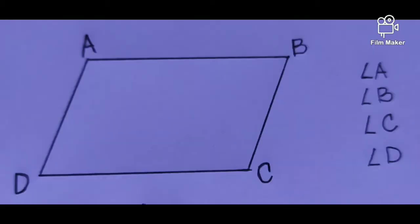We also have the four angles, which are angle A, angle B, angle C, and angle D. And the four vertices are the same with the four angles.